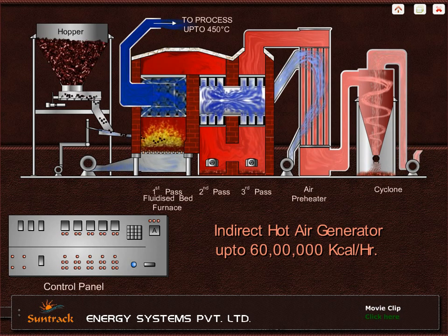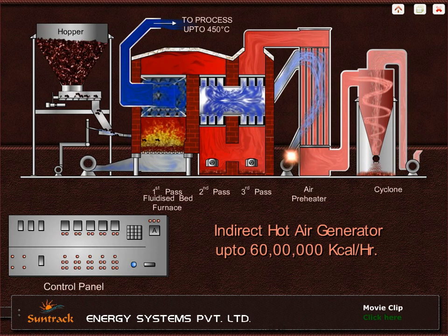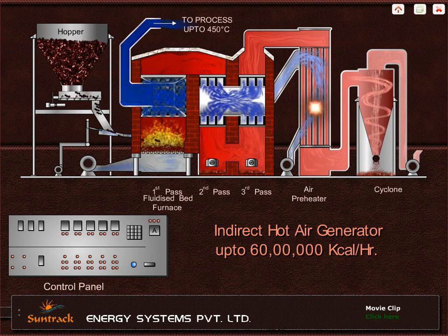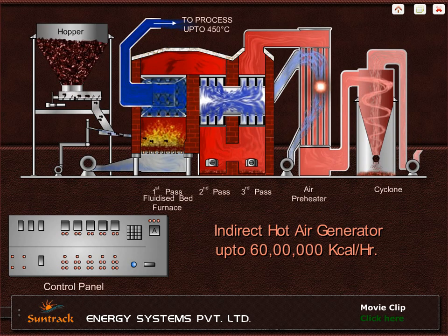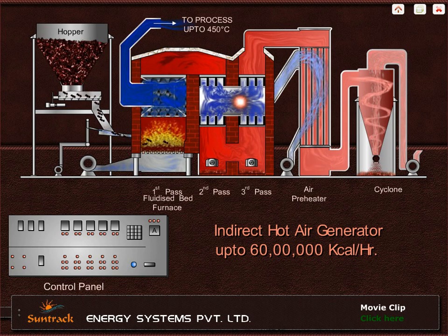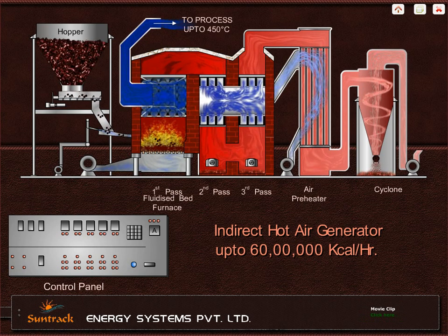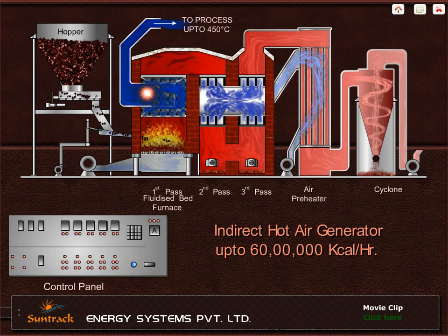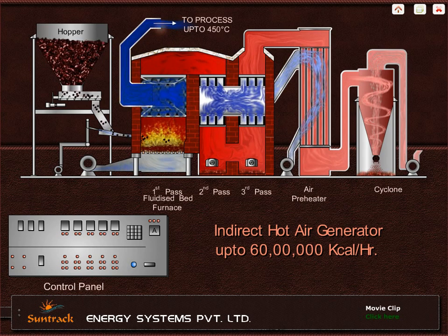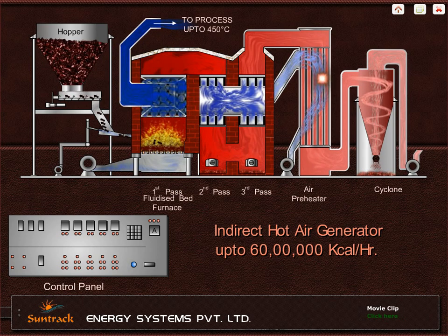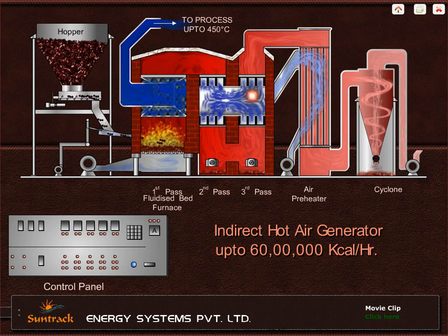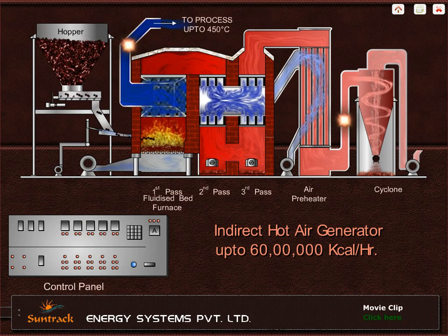Clean air from the atmosphere is drawn by a clean air fan and blown to the air preheater where it gets heated up and passes through the third pass, second pass, and first pass before leaving the system for process requirements. Clean air is heated up counter-currently by combustion flue gases to achieve higher efficiency.